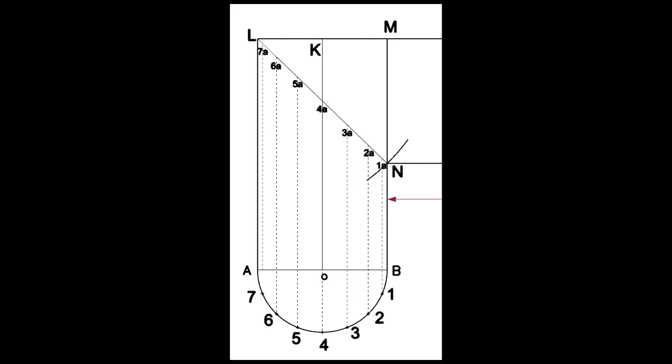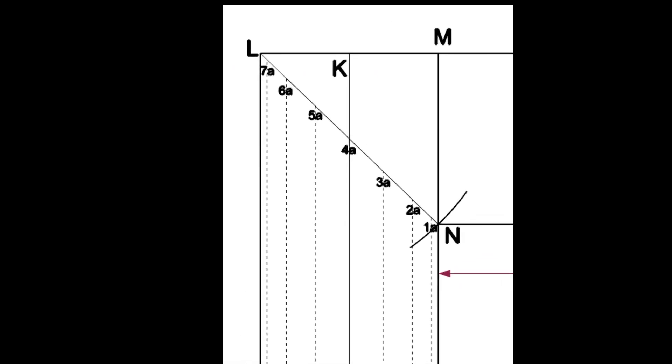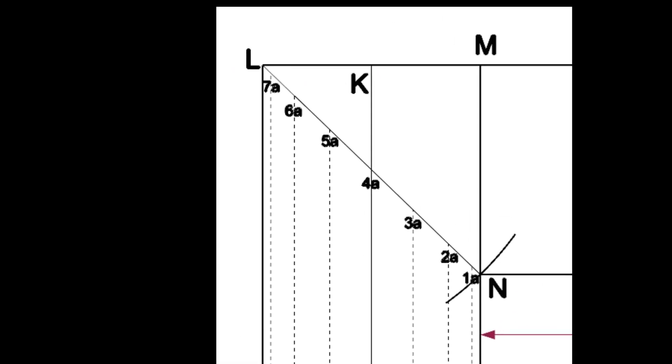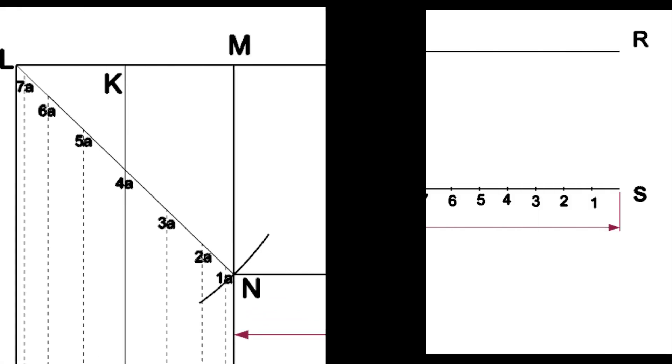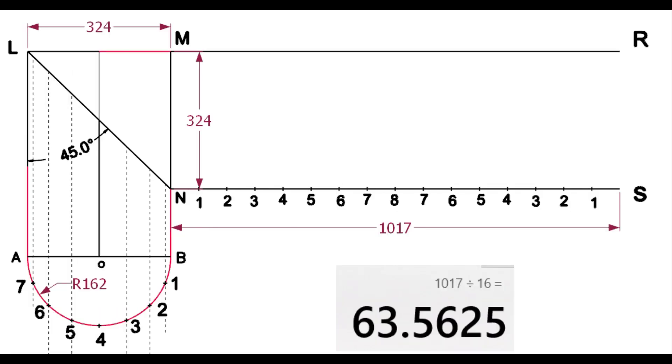Draw the lines 77A, 66A, etc., intersecting the line LN. Divide the line NS into 16 equal parts. Don't forget to number the lines.